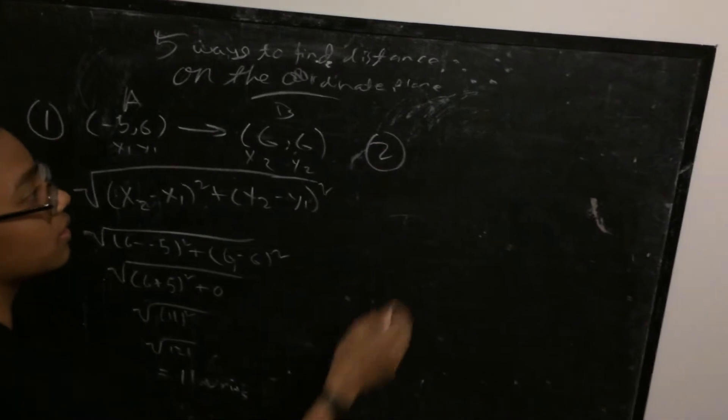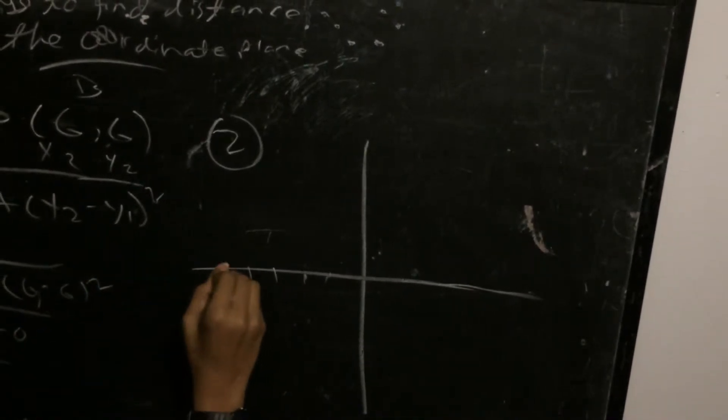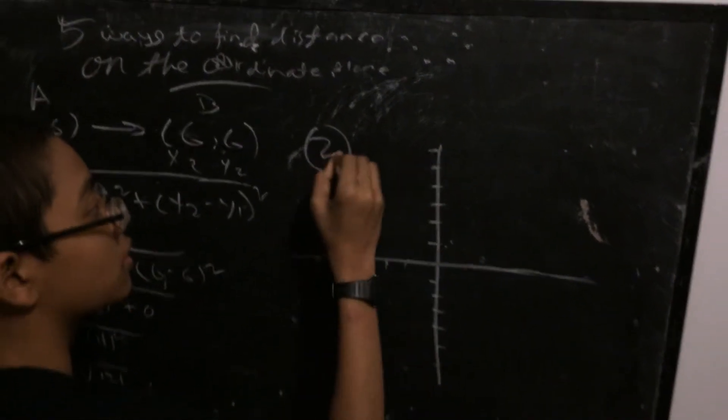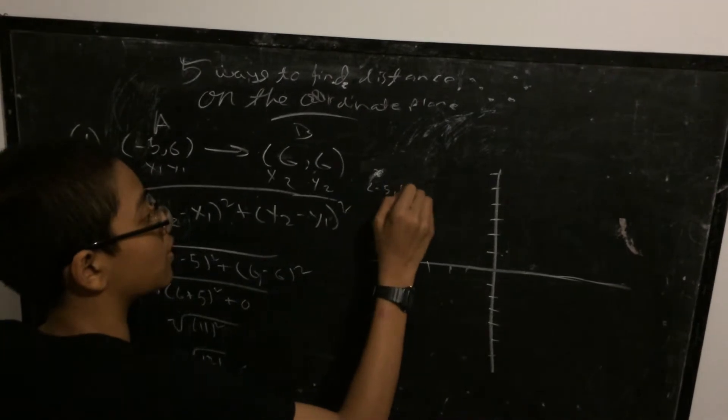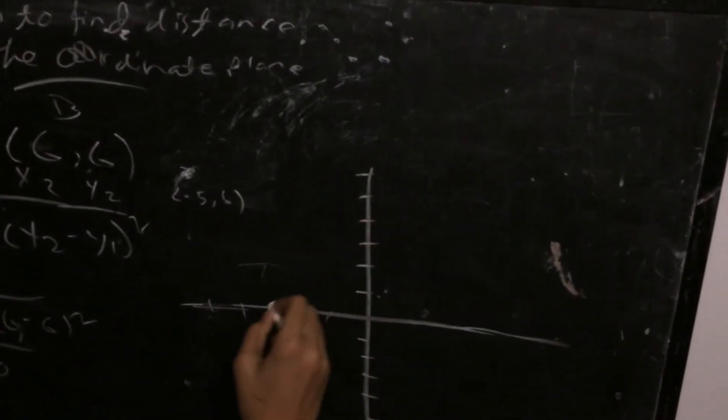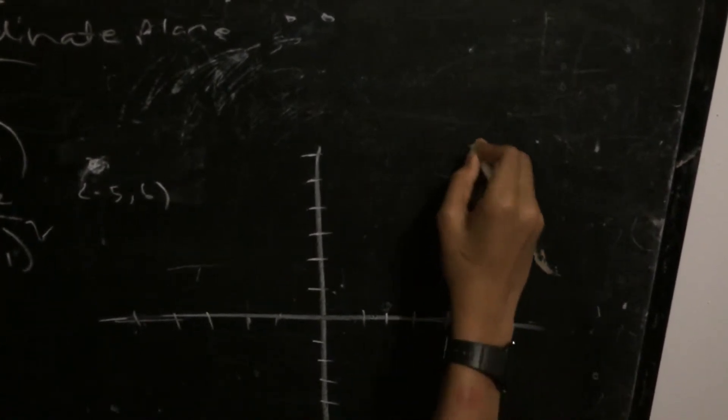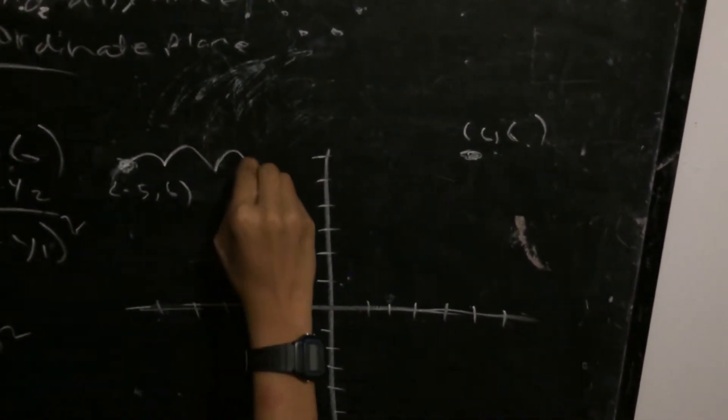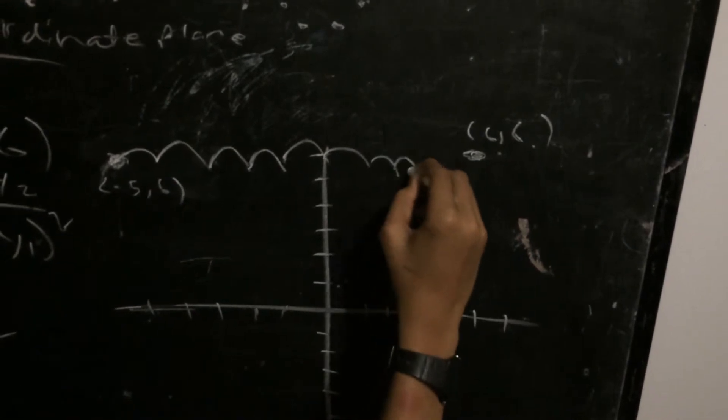The second way you can do it is just draw the coordinate plane and plot out these points and count the units. So 1, 2, 3, 4, 5. This right here would be negative 5 and 6, 6 would be 3, 4, 5, 6 right here. So if you count the distance between these: 1, 2, 3, 4, 5, 6. Five units plus six units equals 11 units in total.